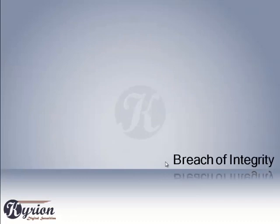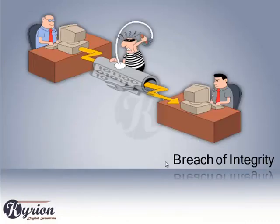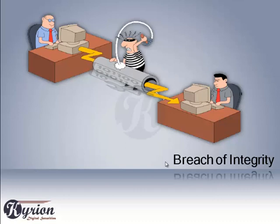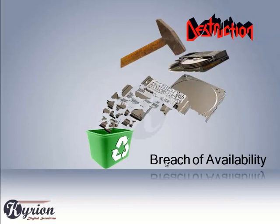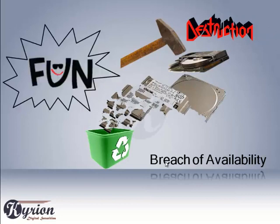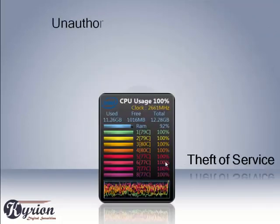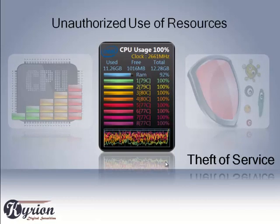Breach of integrity refers to unauthorized modification of data, which may have serious indirect consequences. For example, a popular program's source code could be modified to open up security holes on a user's system before being released to the public. Breach of availability is the unauthorized destruction of data, often just for the fun of it. Theft of services refers to unauthorized use of resources such as theft of CPU cycles or installation of malware.